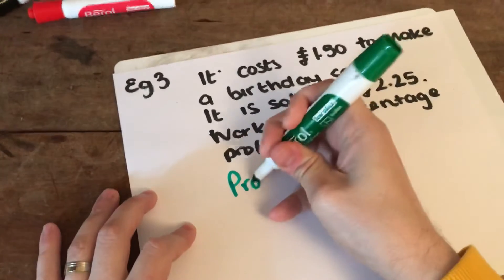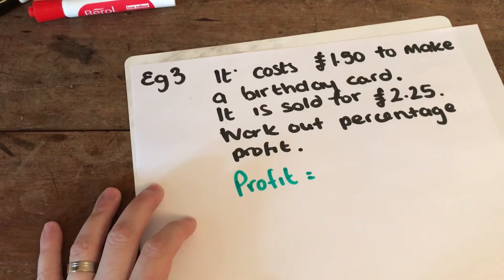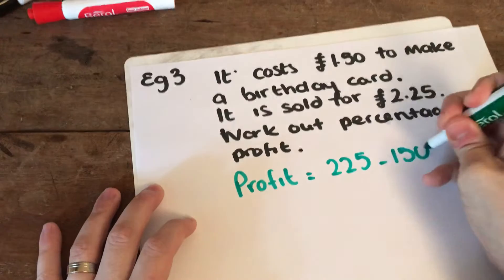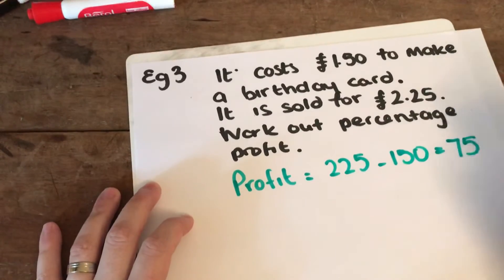So to get to the first step, you want to work out your profit. Often, that would be the first mark on an exam question. So I do 225 because I've turned this into pence, take away 150. That gives me 75.